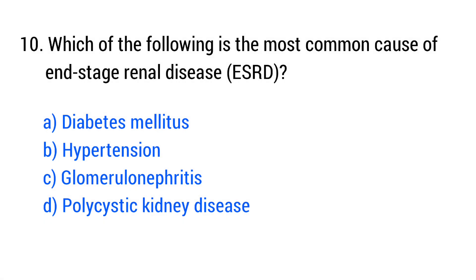Question number 10. Which of the following is the most common cause of end-stage renal disease? The right answer is option A: Diabetes mellitus.